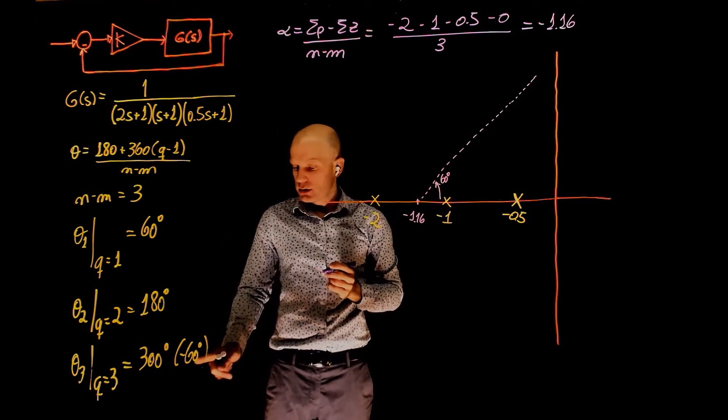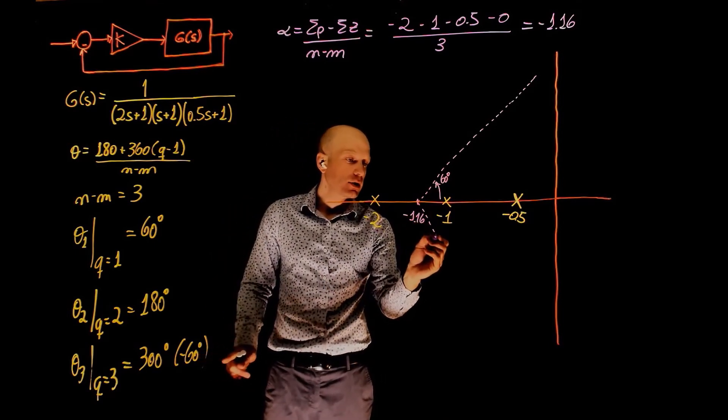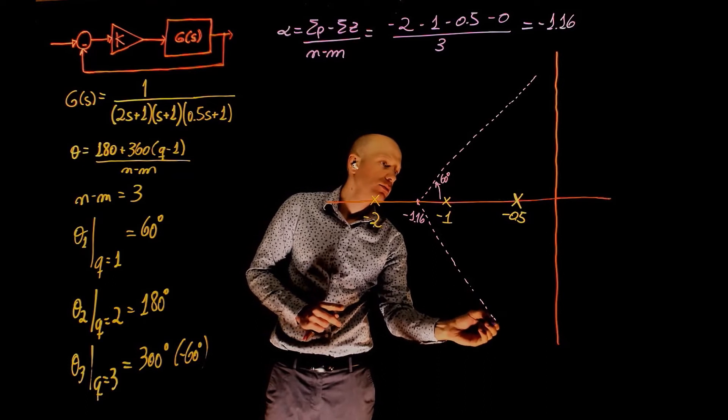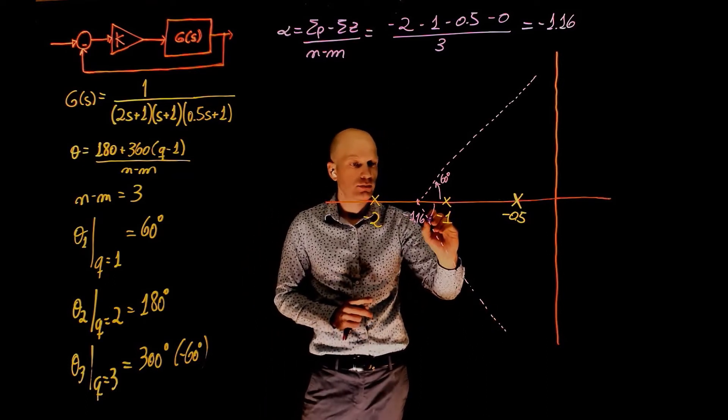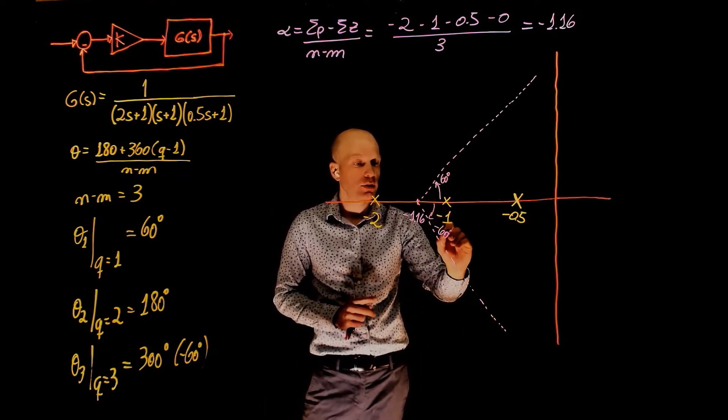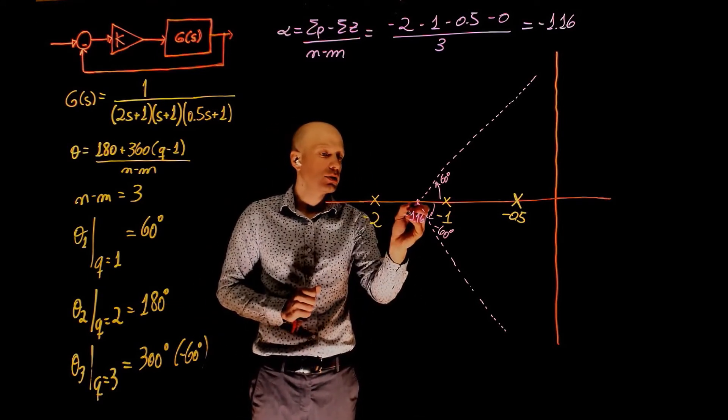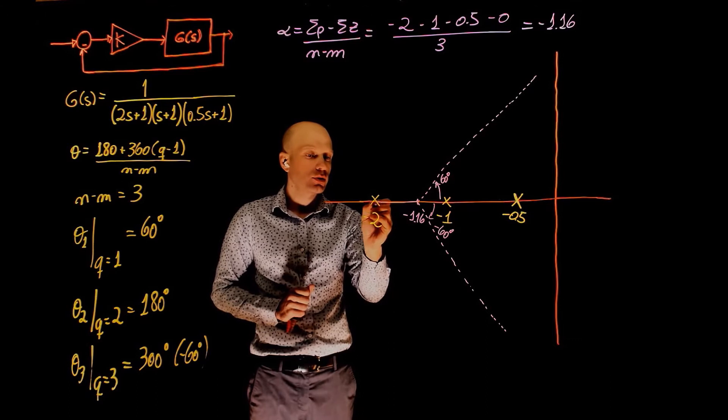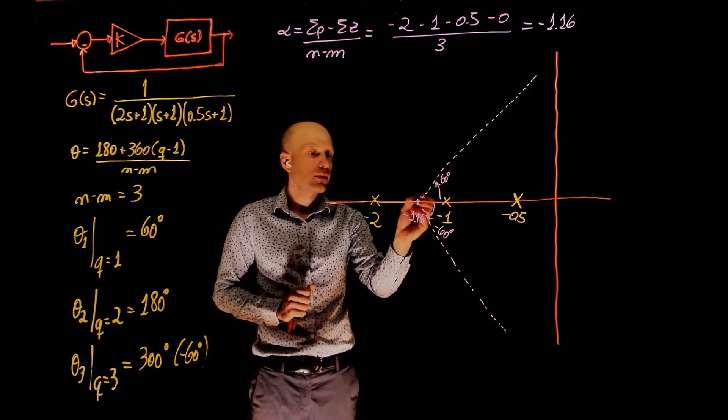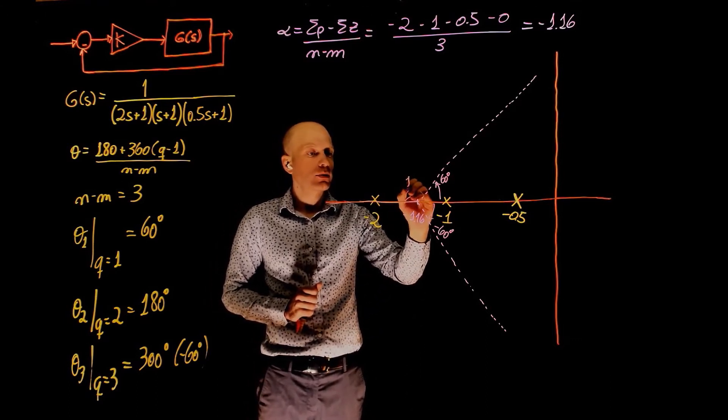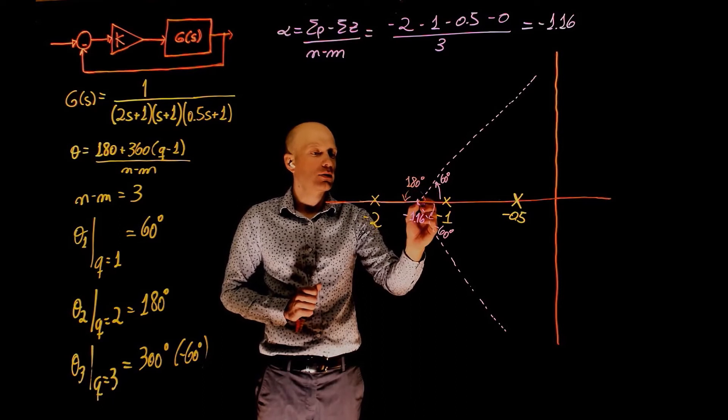The other one has an angle of negative 60 degrees, so it goes down, negative 60 degrees. And the third one has an angle of 180 degrees. So it goes to negative infinity with an angle of 180 degrees, like that.